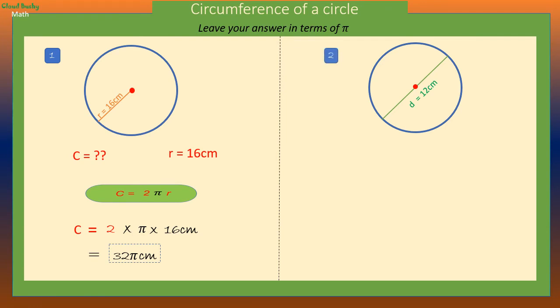Now the circumference of a circle whose diameter is 12 inches is given by the formula c equals pi d. So we have c equals pi times diameter which equals 12 pi inches. This is the circumference in terms of pi.